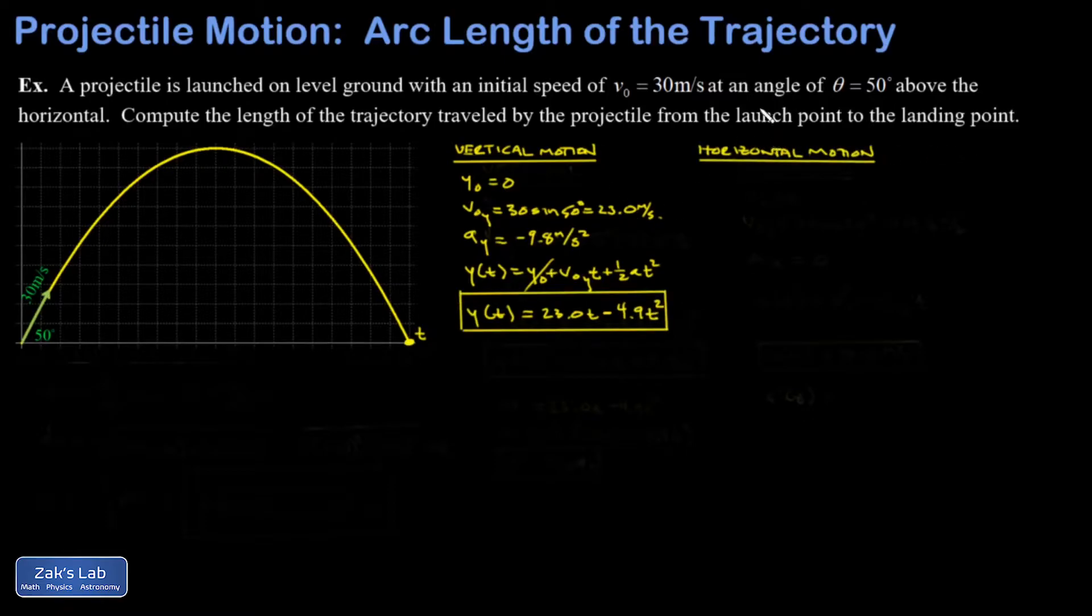Next, I look at the horizontal motion of my projectile. My initial position was zero. My initial x velocity is given by 30 cosine of 50 degrees, and that comes out to 19.3 meters per second. The horizontal motion of a projectile always happens at constant velocity because the acceleration is zero because there are no forces pushing or pulling horizontally.